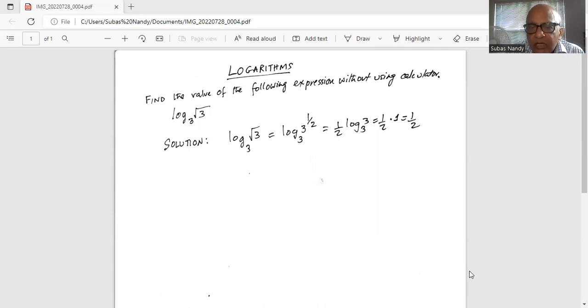In logarithm, the exponent rule states if you have a number raised to an exponent, that exponent comes in front of the logarithm. So it's half times logarithm 3 to the base 3.